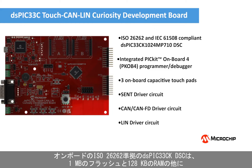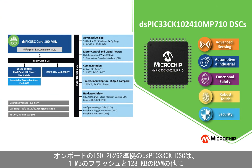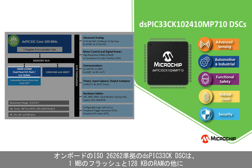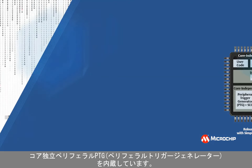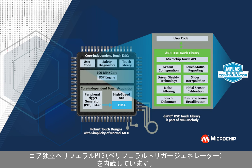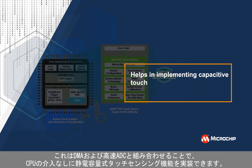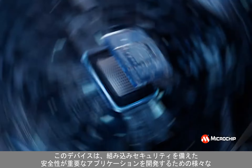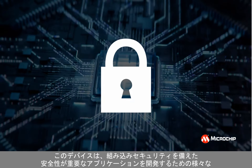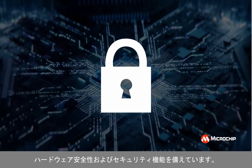The onboard ISO 26262-compliant DSPIC33CK DSC offers 1MB of flash and 128KB of RAM. The on-chip core independent peripherals, such as Peripheral Trigger Generator (PTG), together with DMA and high-speed ADCs, help in implementing capacitive touch sensing without CPU intervention. The device features a range of hardware safety and security features for developing safety-critical applications with embedded security.